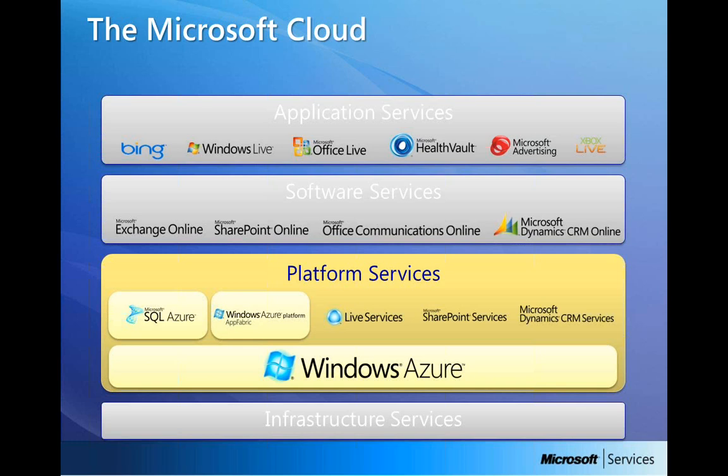Platform as a Service is used when you want to develop your own software, your own application. The word 'platform' means it provides you something so that you can develop your own application. It provides you the Windows Azure SDK — Software Development Kit — which contains various APIs, classes, and interfaces, using which you can develop your Windows Azure application.